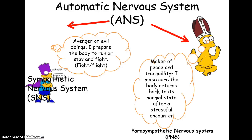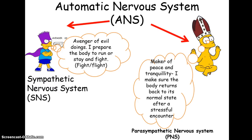We start off with the autonomic nervous system — also called the automatic nervous system in some textbooks. You don't really need to go into too much detail about what it is. It just covers the little things we do that don't require our conscious attention, for example breathing or blinking — things that we just automatically do.